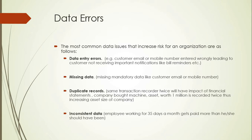Duplicate records are also very common. For example, a company has purchased a machine worth one million, and it's recorded twice in their books — the overall asset size of the company becomes double. Duplicate records over-estimate assets or over-estimate liabilities. Inconsistent data refers to illogical data — for example, due to a system error, an employee is shown as working 35 days a month and gets paid far more than they should.